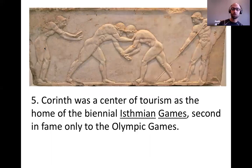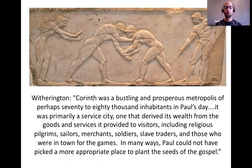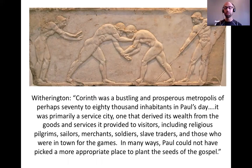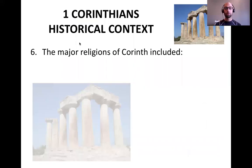Corinth was also a center of tourism as home of the biennial Isthmian Games, second in fame only to the Olympic Games. This probably illuminates why Paul uses athletic metaphors in 1 Corinthians, particularly chapter 9. Ben Witherington writes: 'Corinth was a bustling and prosperous metropolis of perhaps 70,000 to 80,000 inhabitants in Paul's day, which is huge for that era. It was primarily a service city, one that derived its wealth from goods and services provided to visitors, including religious pilgrims, sailors, merchants, soldiers, slave traders, and those in town for the games. In many ways, Paul could not have chosen a more appropriate place from which to spread the gospel.'